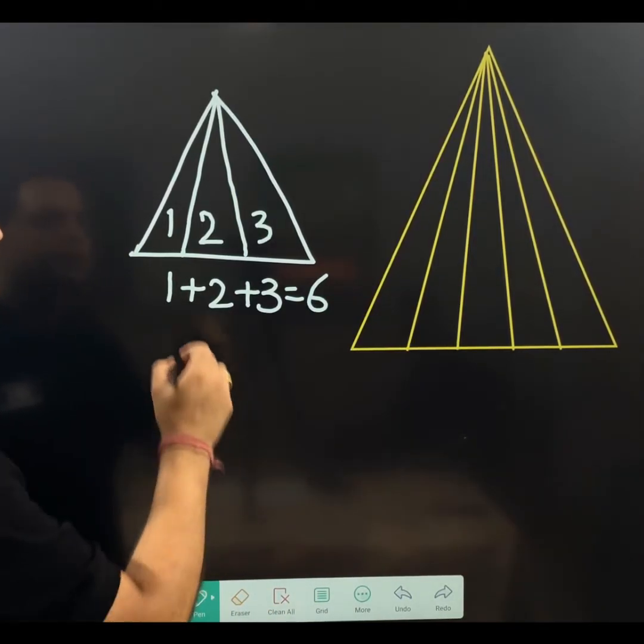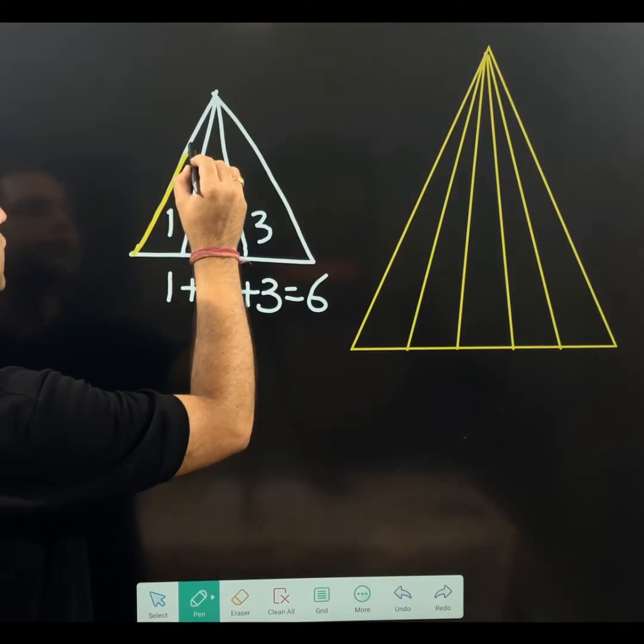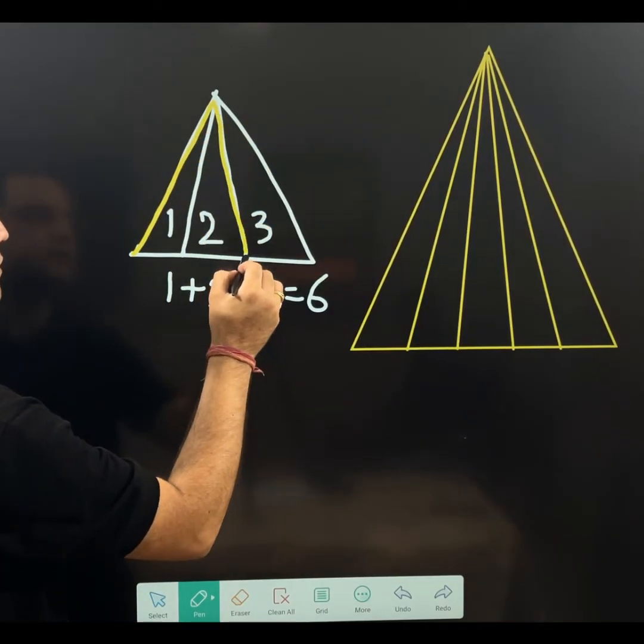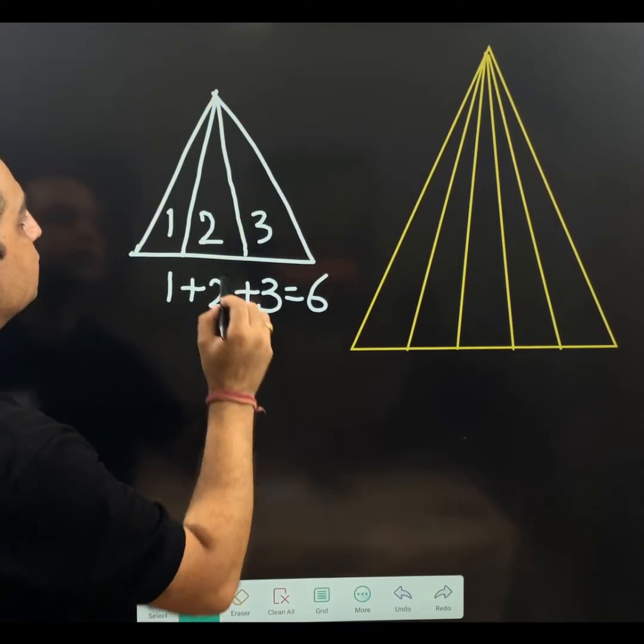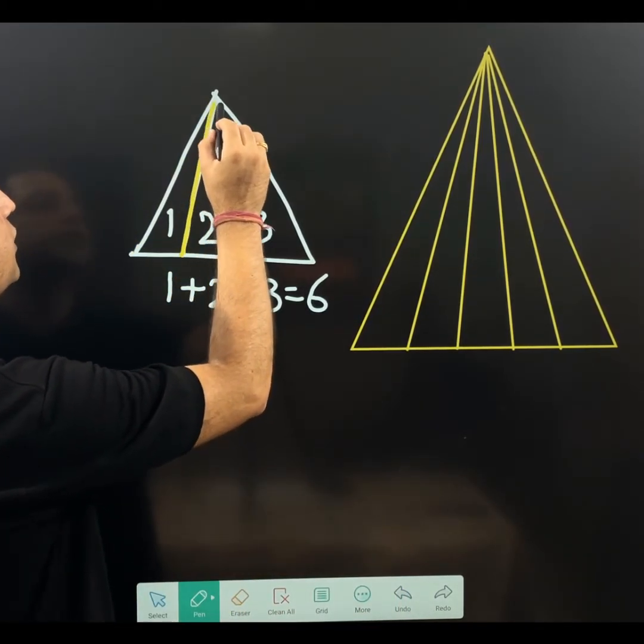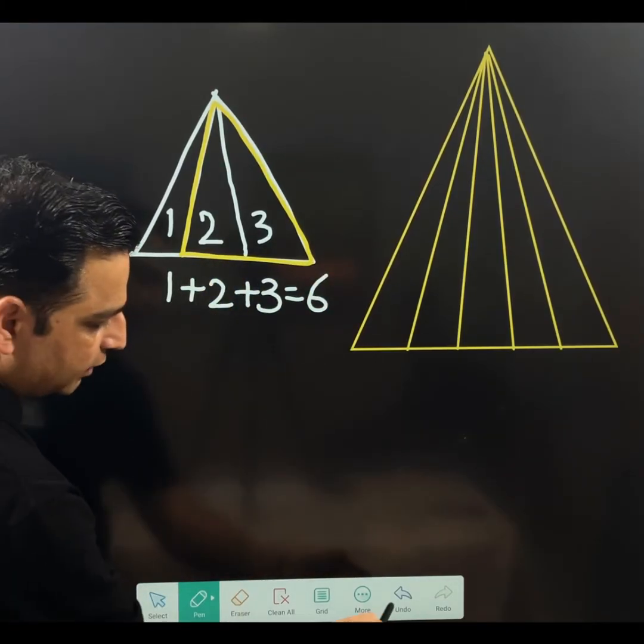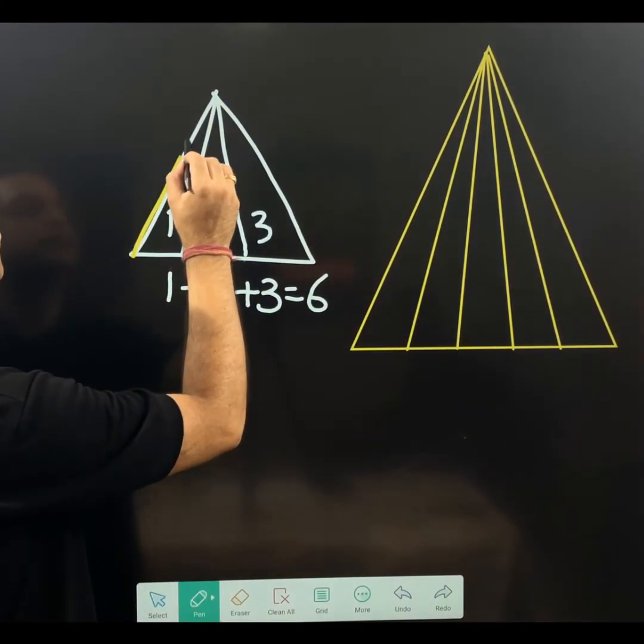Let me show you the fourth triangle formed. This is fourth triangle. And this one is fifth triangle. And sixth triangle is this one.